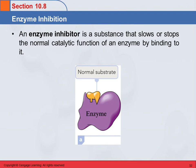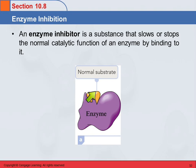Enzyme inhibition. An enzyme inhibitor is a substance that slows or stops the normal catalytic function of the enzyme, and it can happen in different ways. Here's our picture of a normal substrate and the enzyme — the substrate comes in and it binds to the enzyme, and this is normal.